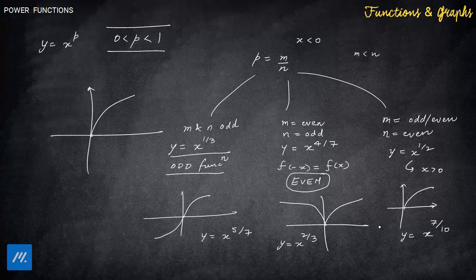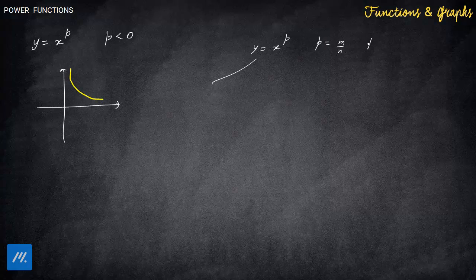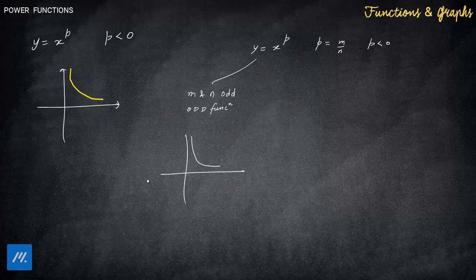Now the third main case: p is negative. We've already drawn the first-quadrant graph, which is asymptotic. Writing p = m/n with p negative, if m and n are both odd, the function is again an odd function. So we project the first-quadrant graph into the third quadrant as a mirror image. Examples include x^(−1/3) and x^(−5/3) — these all have this asymptotic shape in the first and third quadrants.